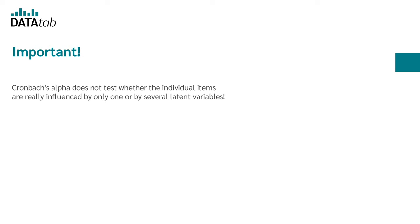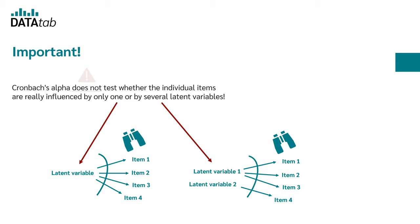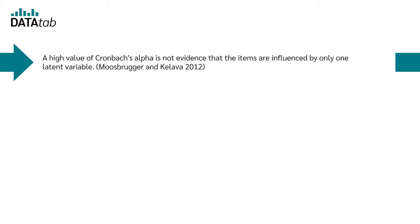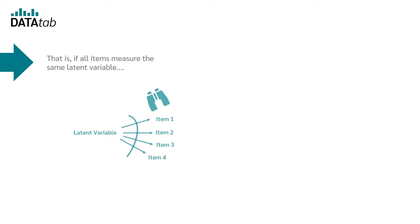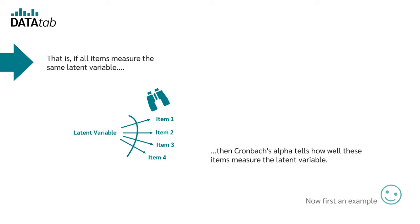What is important here is that Cronbach's alpha does not test whether the individual items are really influenced by only one or by several latent variables. A high value of Cronbach's alpha is not evidence that the items are influenced by only one latent variable. In order to make sure that the reliability of the scale can be estimated using Cronbach's alpha, the conditions must be filled that all questions or items measure the same latent variable. So this means if all items measure the same latent variable, then Cronbach's alpha tells us how well these items measure the latent variable.